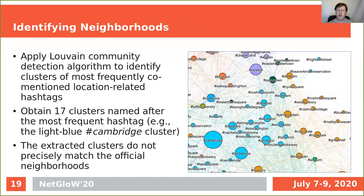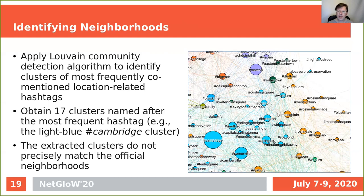Here is an example of a locational graph — the whole graph would be too large to show in one slide. After extracting the graph from the larger network, we applied the Louvain community detection algorithm and automatically identified 17 clusters. For instance, there is a blue cluster that contains the tags Cambridge, Somerville, Medford, East Arlington, Capital Square, Arlington, Menotomy, Massachusetts, Lexington — the town where I live. So these hashtags refer to the western neighborhoods of Boston.